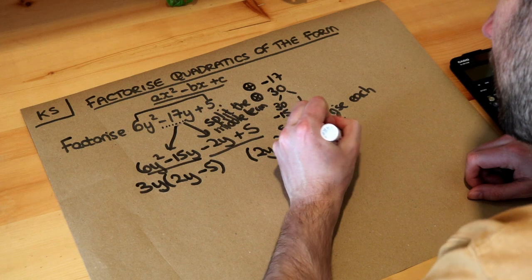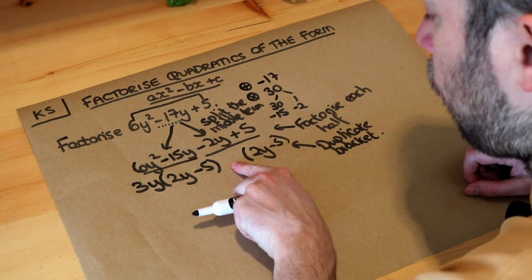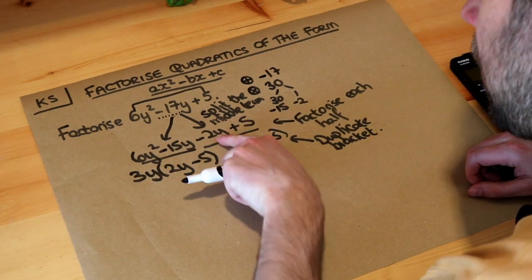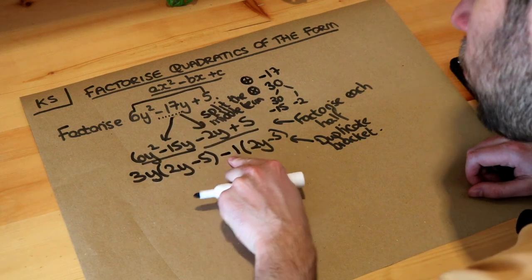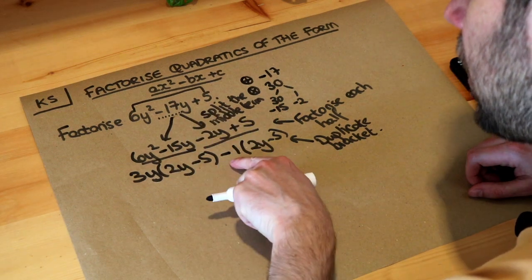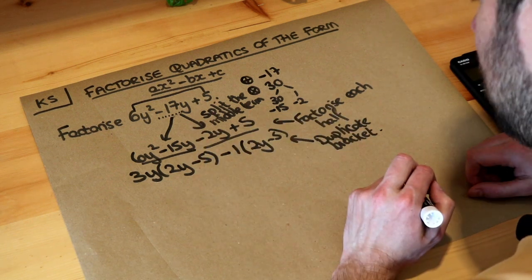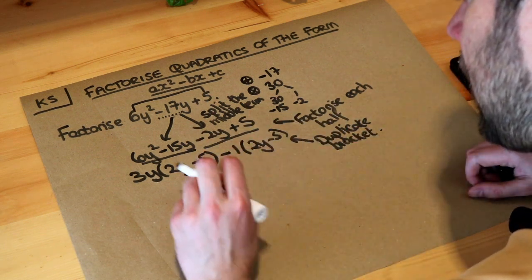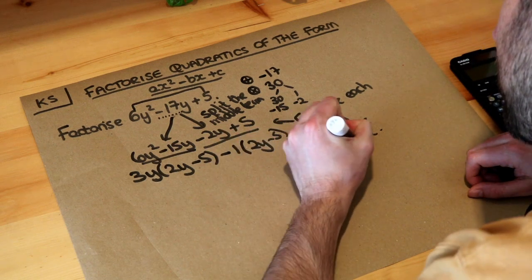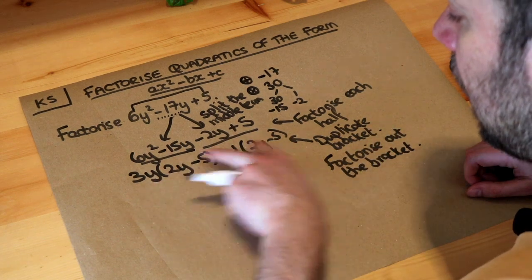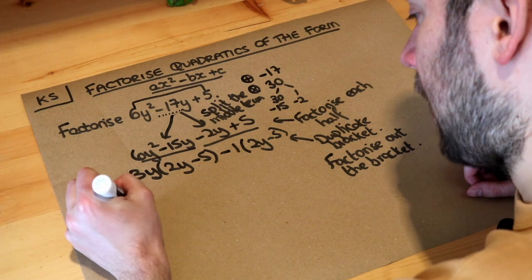Now what times 2y minus 5 gives minus 2y plus 5? It's minus 1 — minus 1 times 2y gives minus 2y, and minus 1 times minus 5 gives positive 5, because negative times negative is positive. The final step is to factorise out the bracket — these two terms have 2y minus 5 in common, so we factorise out the 2y minus 5.